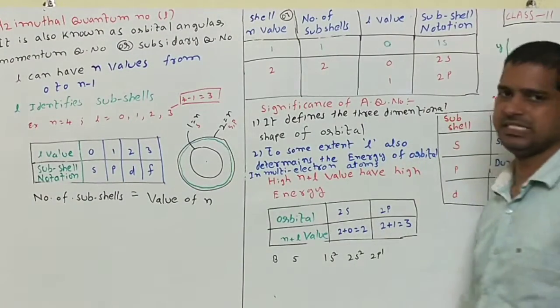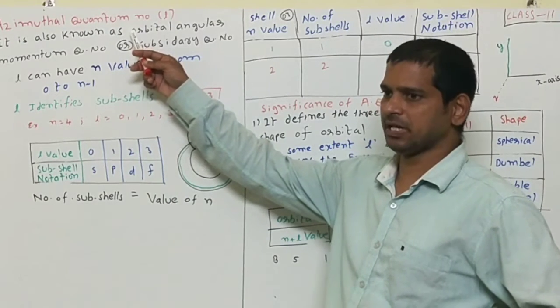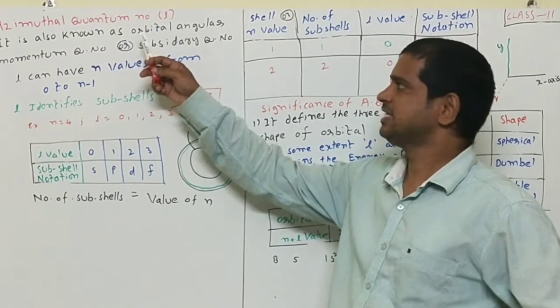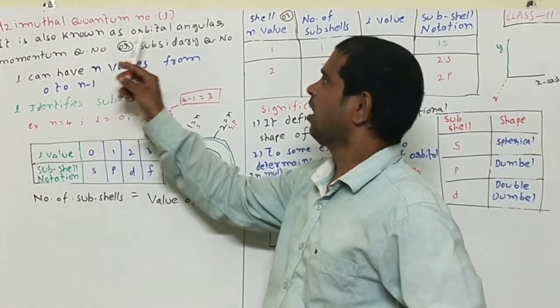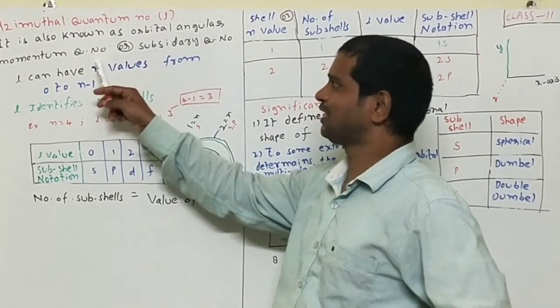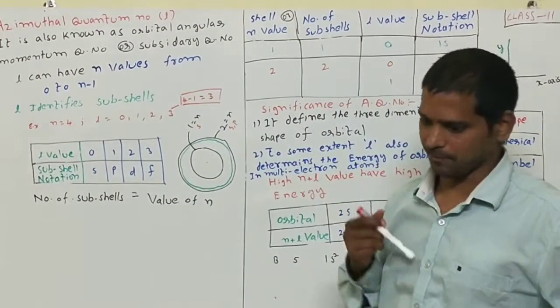Good morning. In this class, I am going to explain azimuthal quantum number. It is denoted by small l. It is also known as orbital angular momentum quantum number or subsidiary quantum number.